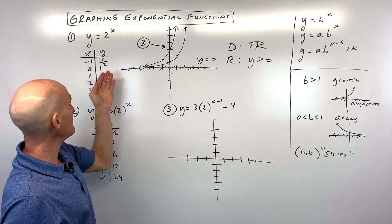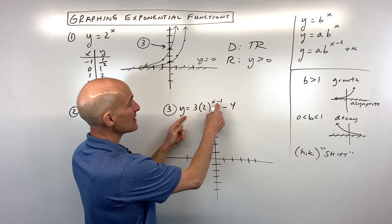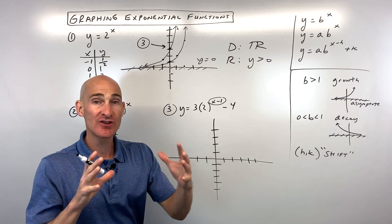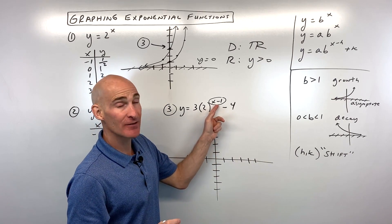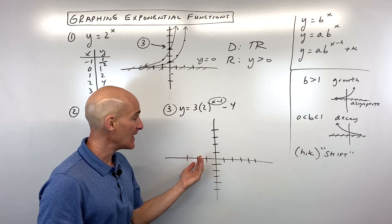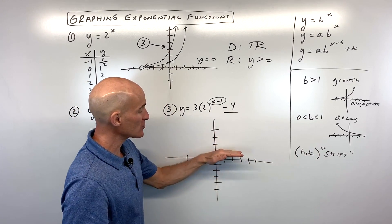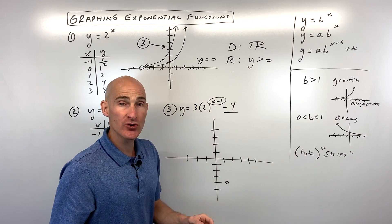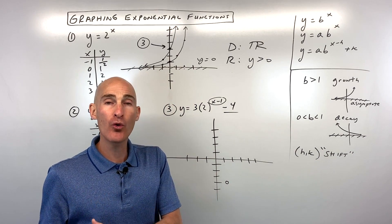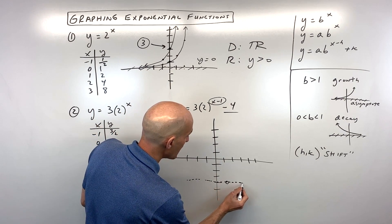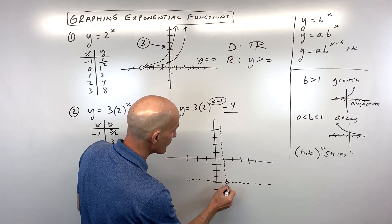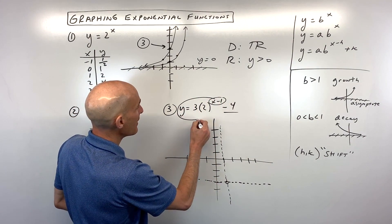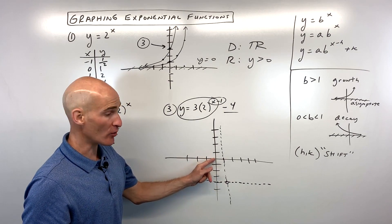For number three, y equals three times two to the x minus one, minus four. The minus one grouped with x shifts the graph in the x direction but with the opposite effect — you'd think left one, but it actually goes right one. The minus four is a vertical shift down four. I put a little open circle at the new shifted origin — right one, down four — and draw in the horizontal asymptote and a dashed vertical line as a new y-axis.